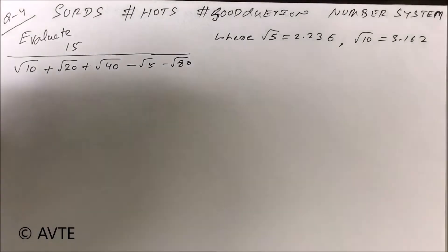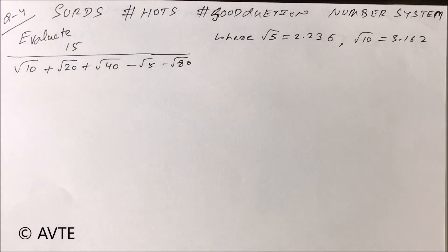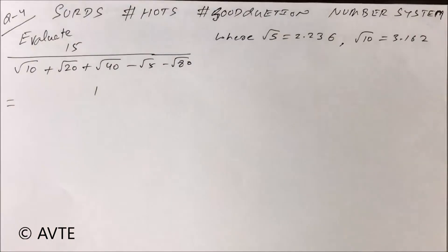The given radical form where root 5 is equal to 2.236 and root 10 is equal to 3.162. So first we have to solve that denominator.